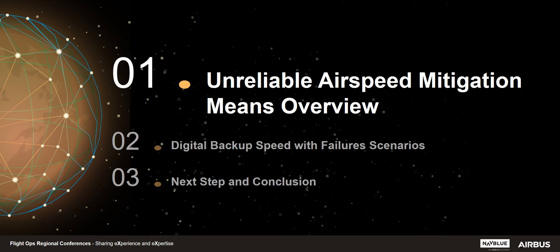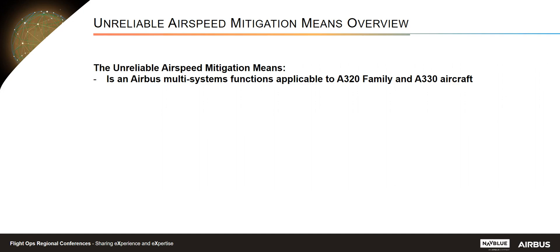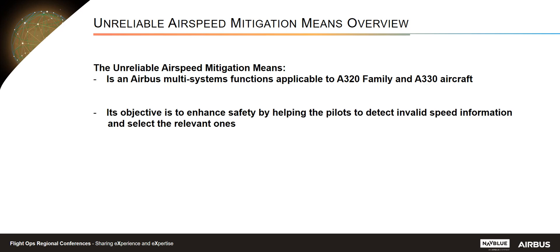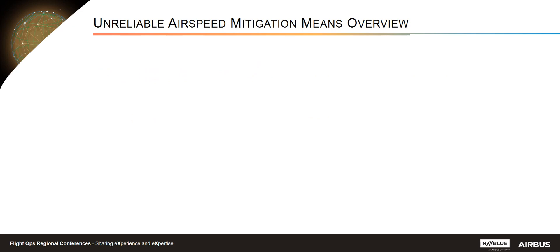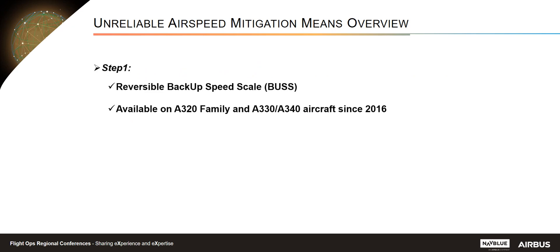The Unreliable ASP mitigation means is an Airbus multi-system function applicable to A320 family and A330 aircraft. Its objective is to enhance safety by helping the pilots detect invalid speed information and select the relevant ones through dedicated ECAM procedures. This function includes three steps. The first step corresponds to the reversible backup speed scale, also known as reversible BUS, available on A320 family and A330 or A340 aircraft since 2016.